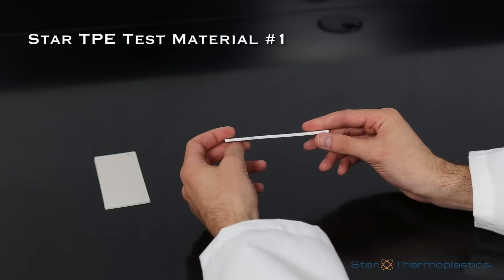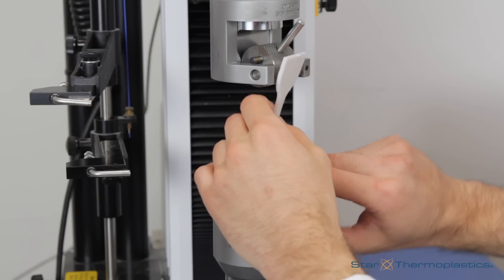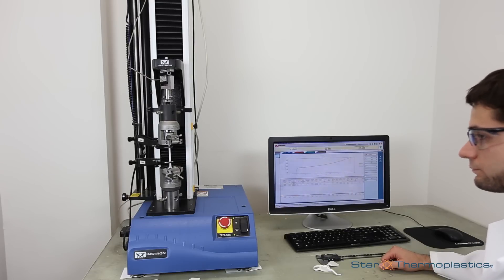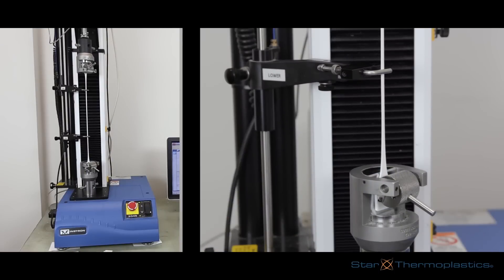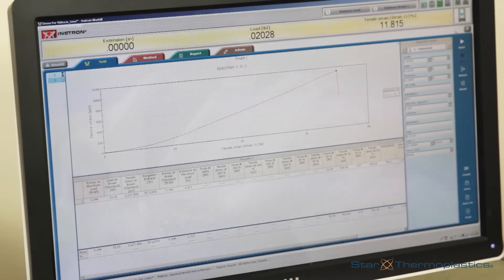The first material we have chosen to test is a star TPE material with a very high tensile strength, such as what you would see in a strap to secure a bicycle to a car carrier. Wow, that was quite a stretch, and a very high tensile strength result as well.